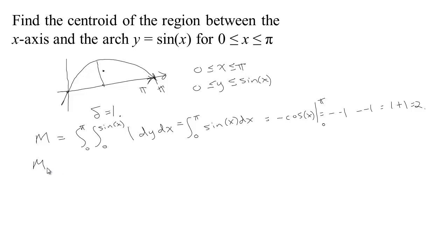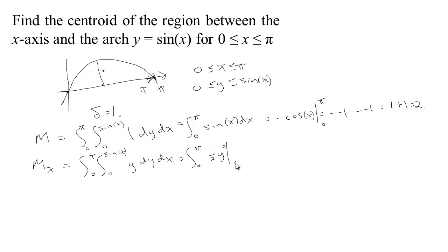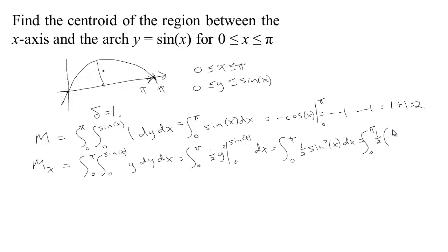Now to compute the moment about the x-axis, M_x. We integrate from 0 to π and from 0 to sin(x). We want the distance from the x-axis, which is y, so the integrand is y dy dx. The antiderivative of y with respect to y is ½y², evaluated between 0 and sin(x). That gives us the integral from 0 to π of ½ sin²(x) dx.